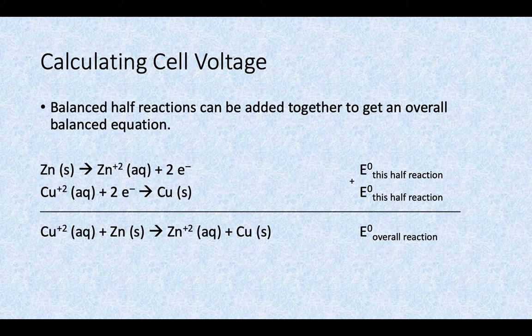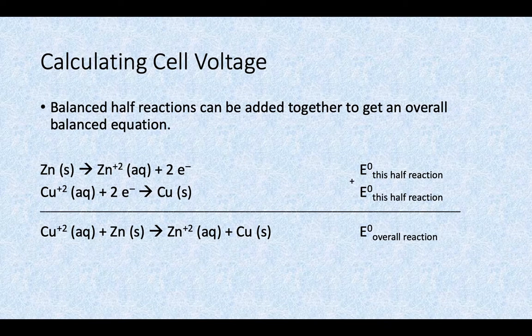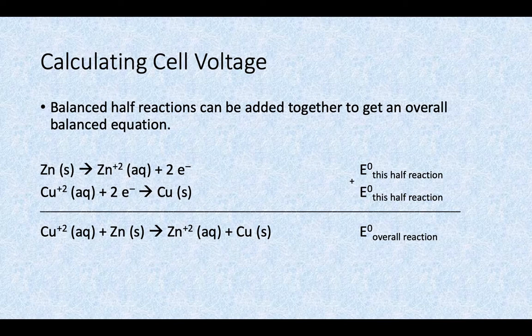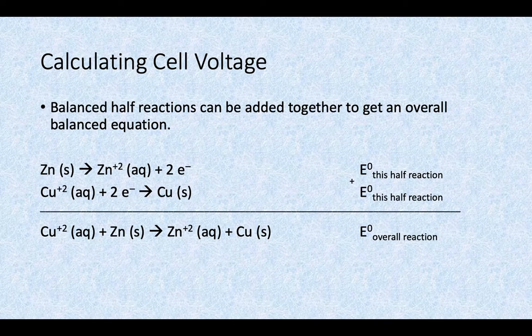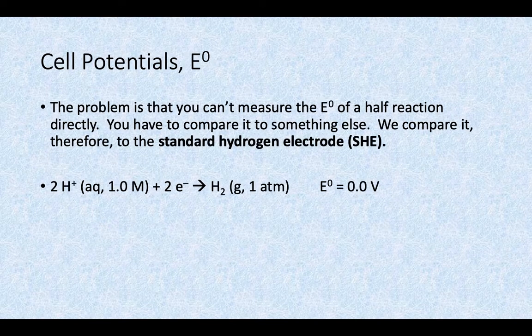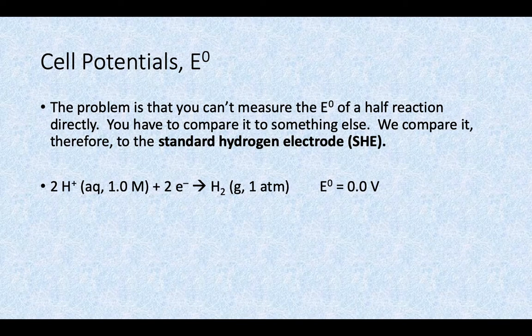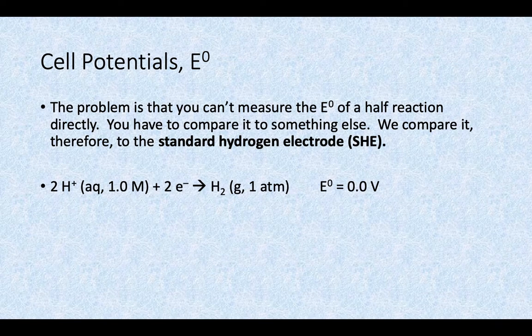In order to calculate this cell voltage, you need your balanced half reactions. And if you know the standard cell potential for each half reaction, you could add those half reactions together to get the overall reaction. The problem is that you can't measure the standard cell potential, E°, of a half reaction directly. You have to compare it to something else.